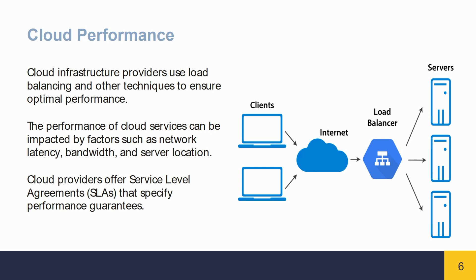Cloud Performance. Cloud Infrastructure Providers use load balancing and other techniques to ensure optimal performance. The performance of cloud services can be impacted by factors such as network latency, bandwidth, and server location. Cloud Providers offer service-level agreements (SLAs) that specify performance guarantees.